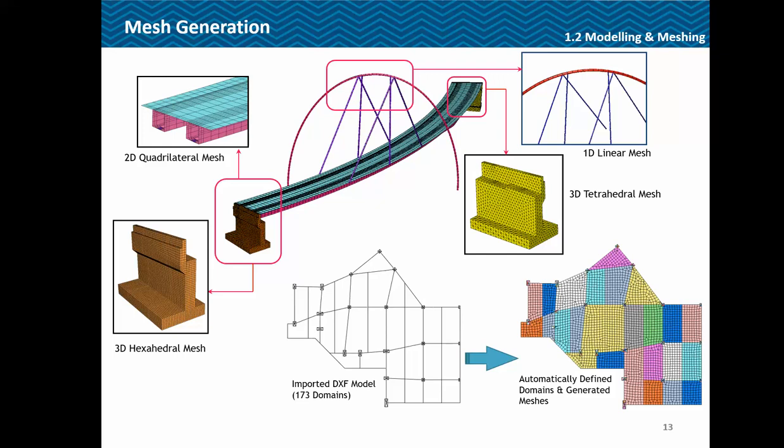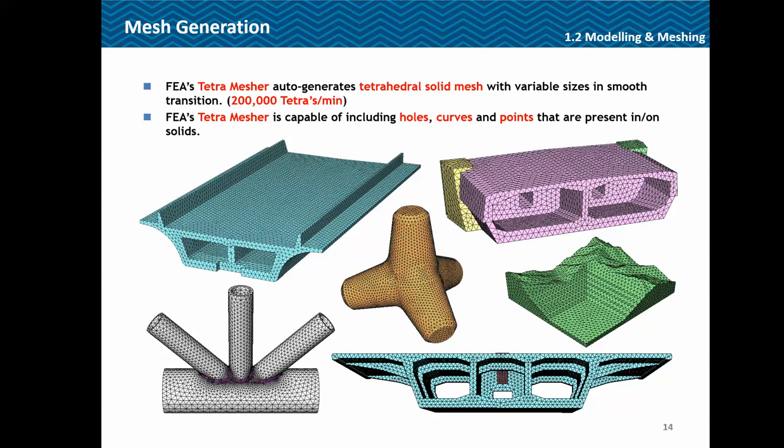Now coming to the mesh part. One model can have multiple types of elements like 2D quad mesh, 3D hex mesh, tetrahedral mesh, as well as 1D mesh, and all of these would be connected directly. We can import from multiple CAD softwares, so if you have complex line geometry in a DXF file it can be directly imported and the surface mesh would be obtained without needing to create surfaces from lines. The tetra mesher in FEA NX generates tetrahedral solids of variable size in smooth transition at a rate of 2 lakh tetras per minute, and it is capable of handling holes or points on or in the solids.